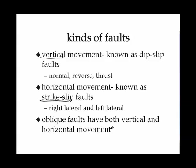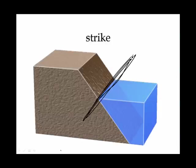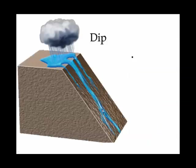You can memorize those names, or you can make sense of them by using the terms you have learned before. The strike is a compass direction along the line that a horizontal plane makes with a tilted plane — that plane could be a rock layer or the fault itself. The dip, on the other hand, is the direction in which material would drip down the side of the plane.